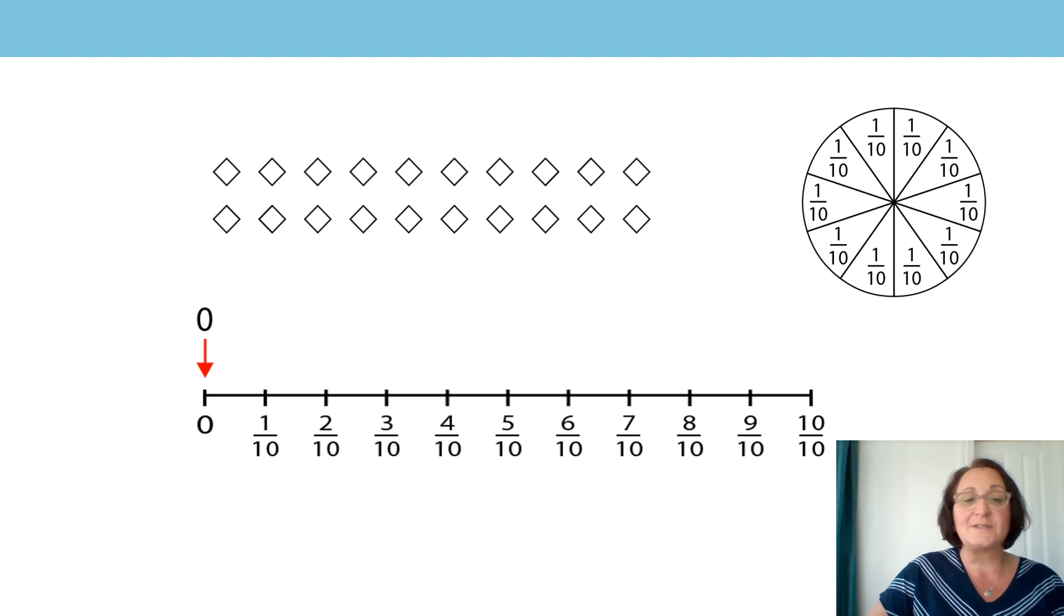When we start at zero, you can see that none of the shapes are shaded, and none of the parts of the circle are highlighted. That's because we're at zero. Once we move from zero and start to travel along the number line, we should increase the amount of shapes and increase the amount of shaded parts of the circle. Let's see if that happens. Okay, so we've gone from zero to one-tenth, and we can see that two of those shapes have been shaded, and one of the parts of our circle has been shaded too.